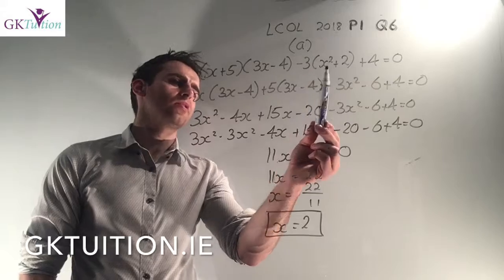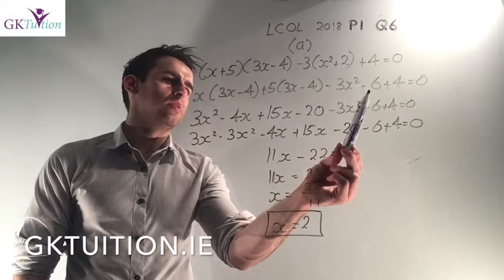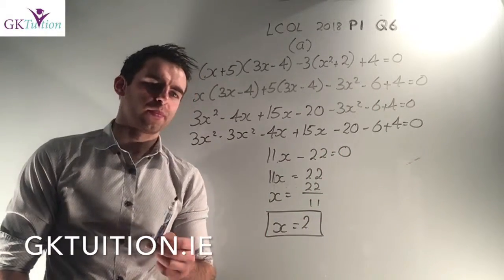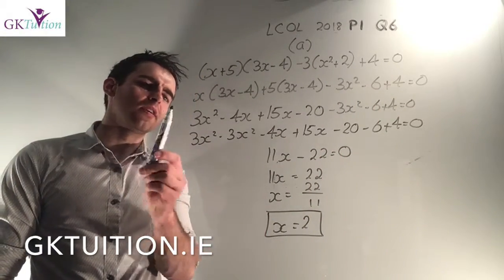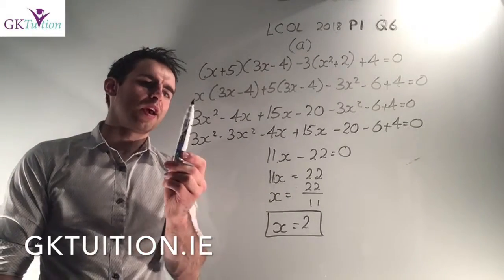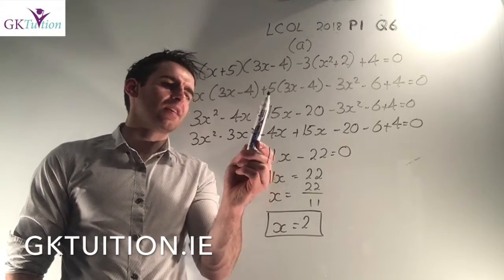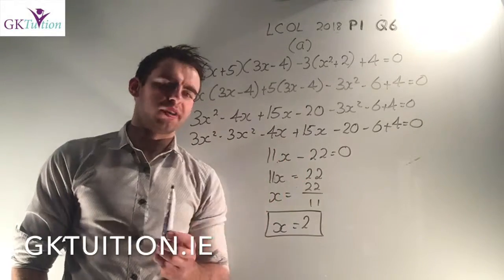I've multiplied -3 by x² gives me -3x², -3 by +2 gives me -6, and I just take down the +4. Now on the third line here I've multiplied out my brackets. x by 3x is 3x², x by -4 is -4x, 5 by 3x is 15x, plus 5 by -4 is -20.